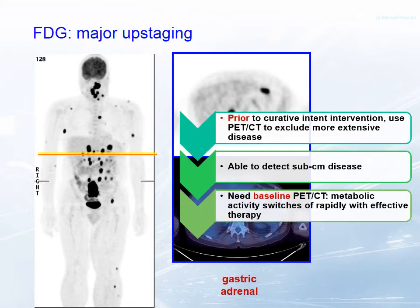Clearly, prior to curative intent intervention such as cutting out the adrenal gland, using FDG PET to exclude more extensive metastatic disease is a sensible approach. We're able to detect sub-centimeter disease with confidence. We need to do this at baseline. A recent randomized trial looking at the role of FDG PET prior to hepatic resection in colorectal cancer suggested not much of a role, but they performed the PET after chemotherapy, not at baseline. Metabolic activity switches off quickly, so PET is not useful for staging after treatment has begun.